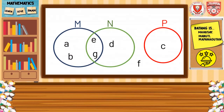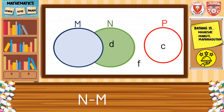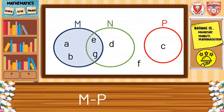Next, we find the difference of N minus M. N has elements E, D, and G. We remove all elements in set M. The answer is D. Now let's find M minus P. M equals {A, B, E, G} and P is {C}. Since P does not intersect with the elements of M, the final answer is A, B, E, and G.